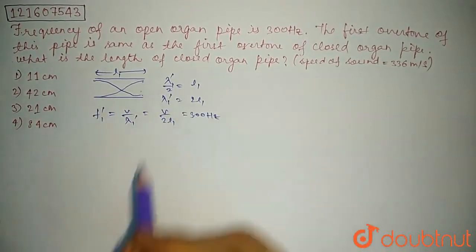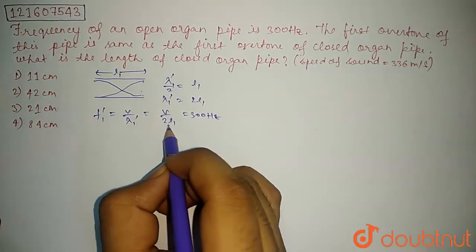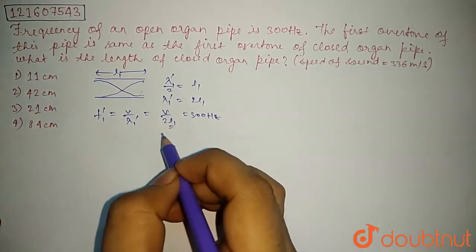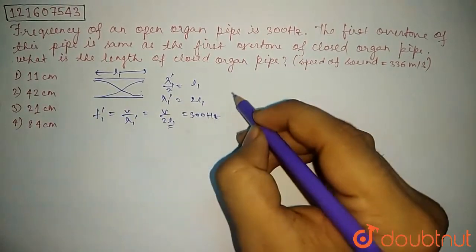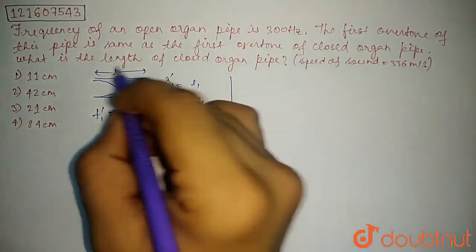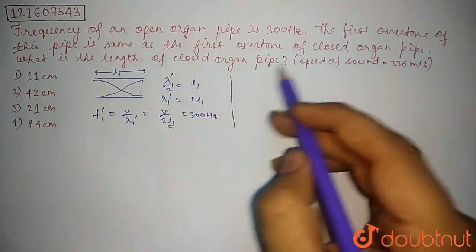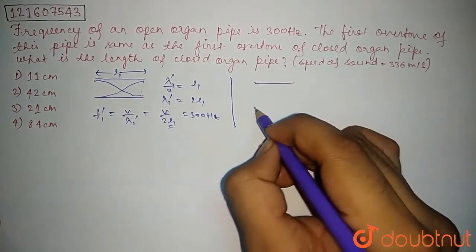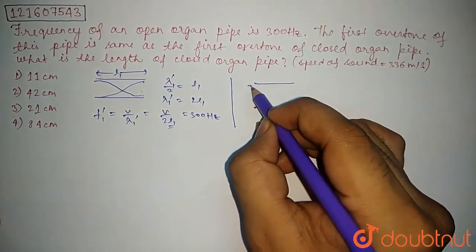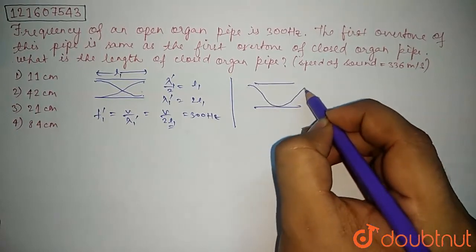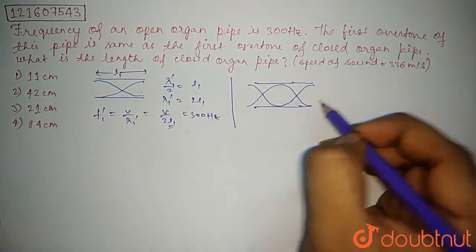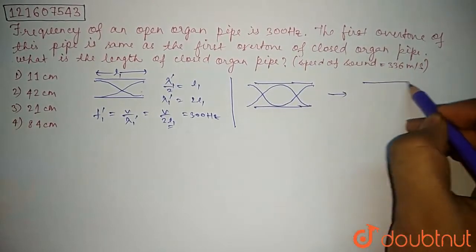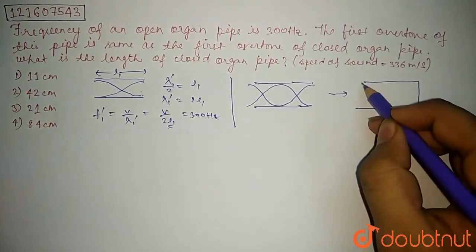So L1, because sound speed is 336 meter per second, here the correction: it is first overtone of open pipe, first overtone, this is the first overtone.